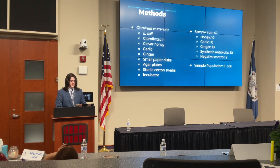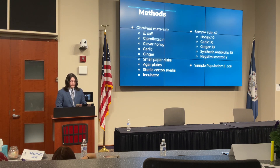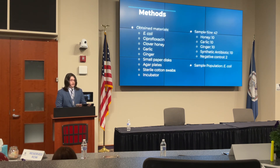I had many materials for this experiment, with the most notable being the bacteria E. coli, the synthetic antibiotic ciprofloxacin, and the natural antimicrobials honey, garlic, and ginger. I chose E. coli since it is such a common bacteria, and I chose ciprofloxacin since it is known to inhibit the growth of E. coli. My sample size was 42, with 10 petri dishes allotted for each of the natural antimicrobials as well as the synthetic antibiotic group, and two for the negative control. My sample population was the E. coli, since it is the group that I'm testing.